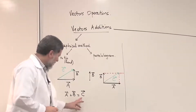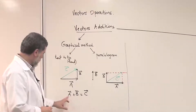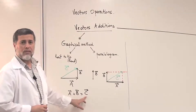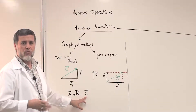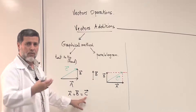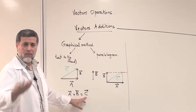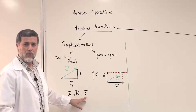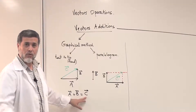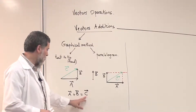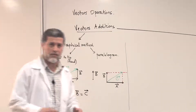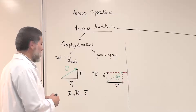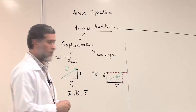Vector C, which is the addition of vector A and B, is generally called the resultant. We will use this word a lot in this course — we can have the resultant of a velocity vector, or the resultant of forces, also called the net force.